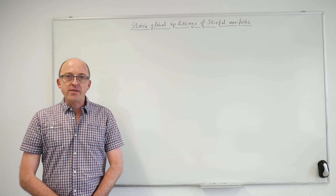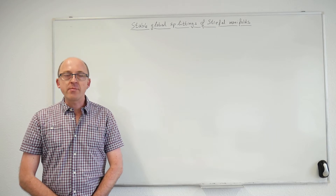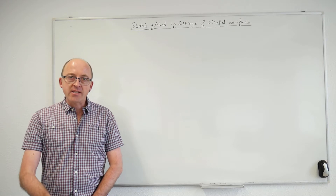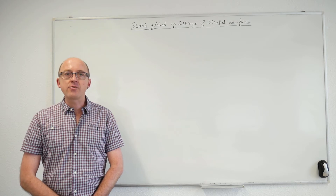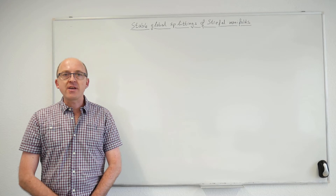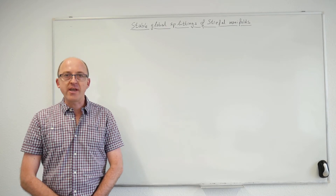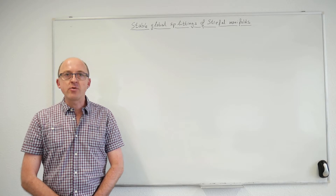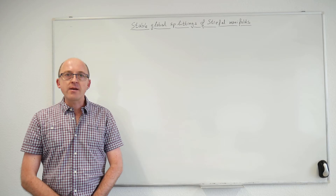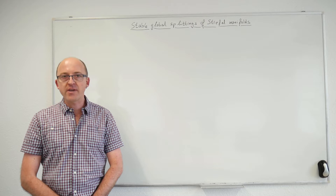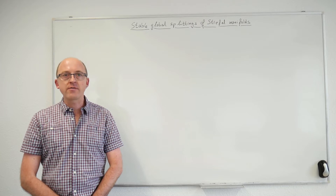In most of this lecture and the next, I will concentrate on one particular case: the global analog of the infinite orthogonal group. The stable splitting in that case can be generalized in at least two directions, but the methods used to prove the generalizations are very similar. At the end of the next lecture, I'll explain the more general statements. I'm concentrating on the infinite orthogonal group to avoid obscuring the key ideas and overloading the notation.